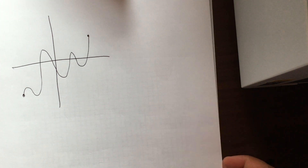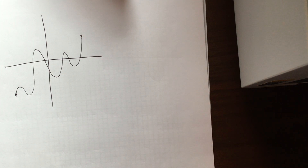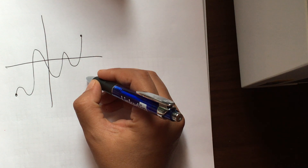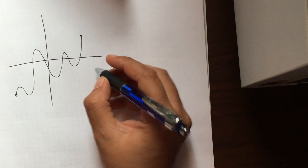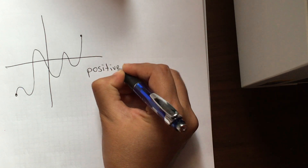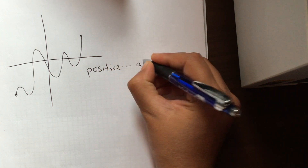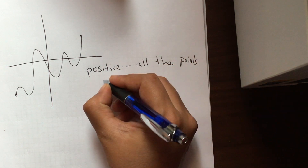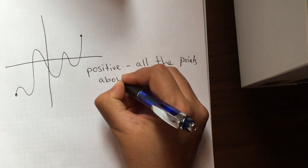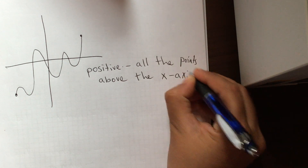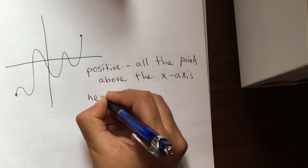Another vocabulary we're going to learn so that we can interpret the function is where the graph is positive and where the graph is negative. The graph is positive when all the points are above the x-axis.